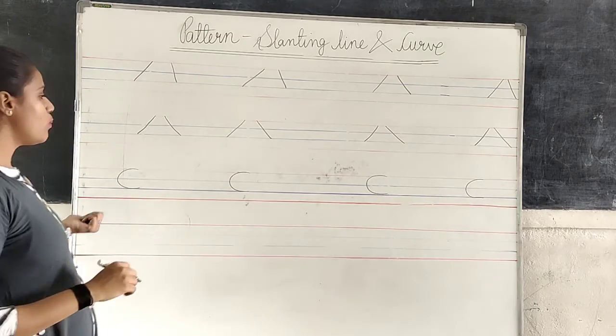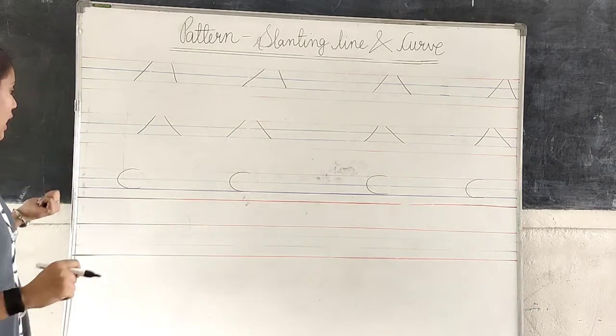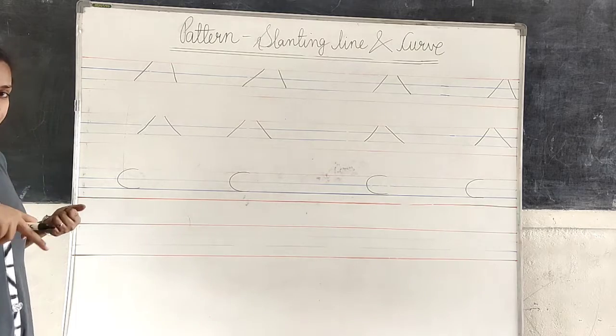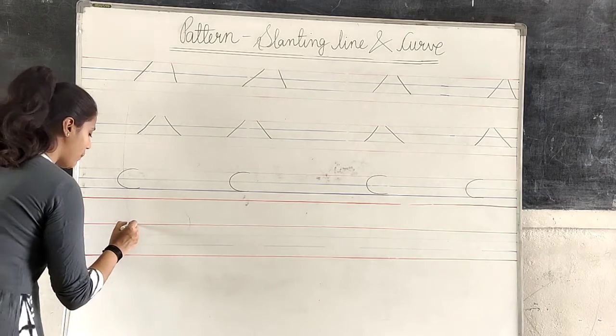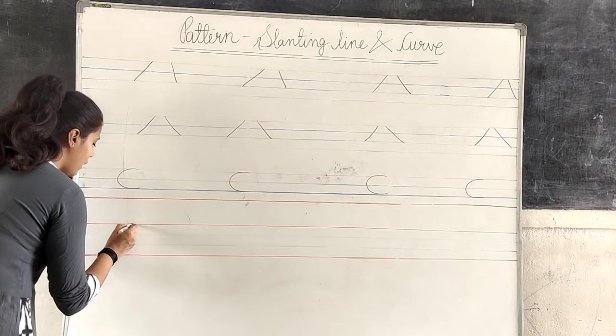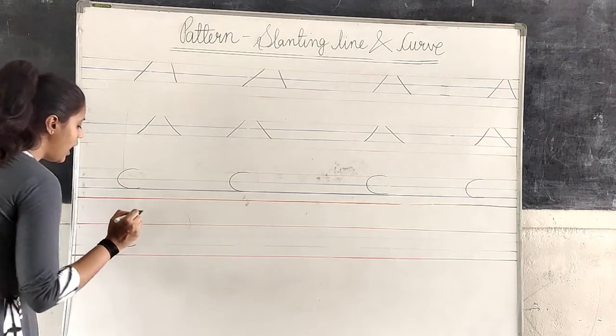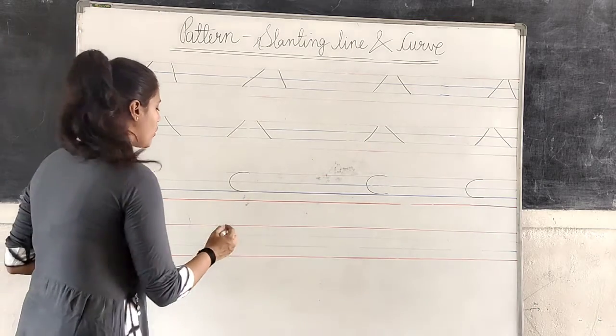Done? And now we want to curve. How to draw a curve? Half circle. Place your pencil on the top of the line and make a half circle. Okay.